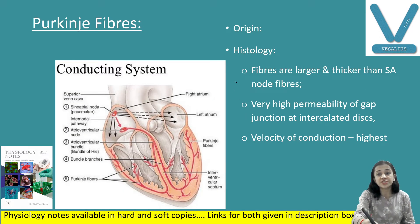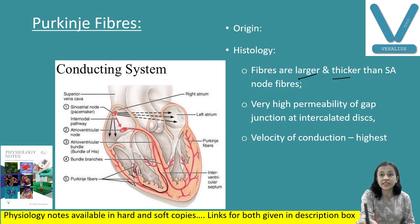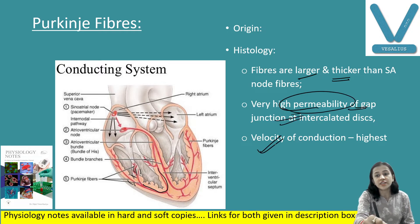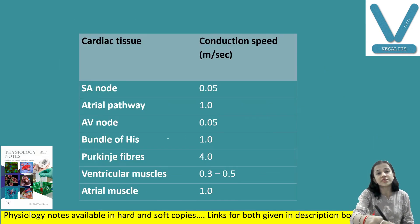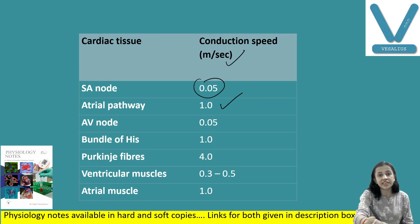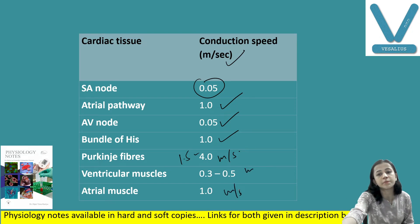Purkinje fibers originate from the terminal divisions of the bundle branches. Histologically, these fibers are large and thicker than SA node fibers, and they have a higher number of gap junctions. Therefore, the velocity of conduction is highest in Purkinje fibers: 1.5 to 4 meters per second. Conduction velocities: SA node 0.05 m/s, atrial fiber 1 m/s, AV node 0.05 m/s, bundle of His 1 m/s, Purkinje fiber 1.5–4 m/s, ventricular muscle fiber 0.3–0.5 m/s.